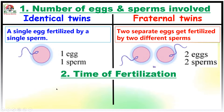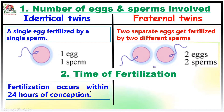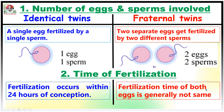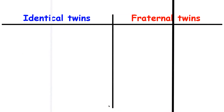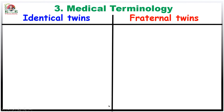The second parameter is about the time of fertilization. In case of identical twins, fertilization occurs within 24 hours of conception. On the other hand, the fertilization time of both eggs is generally not the same in case of fraternal twins. The third parameter is medical terminology.